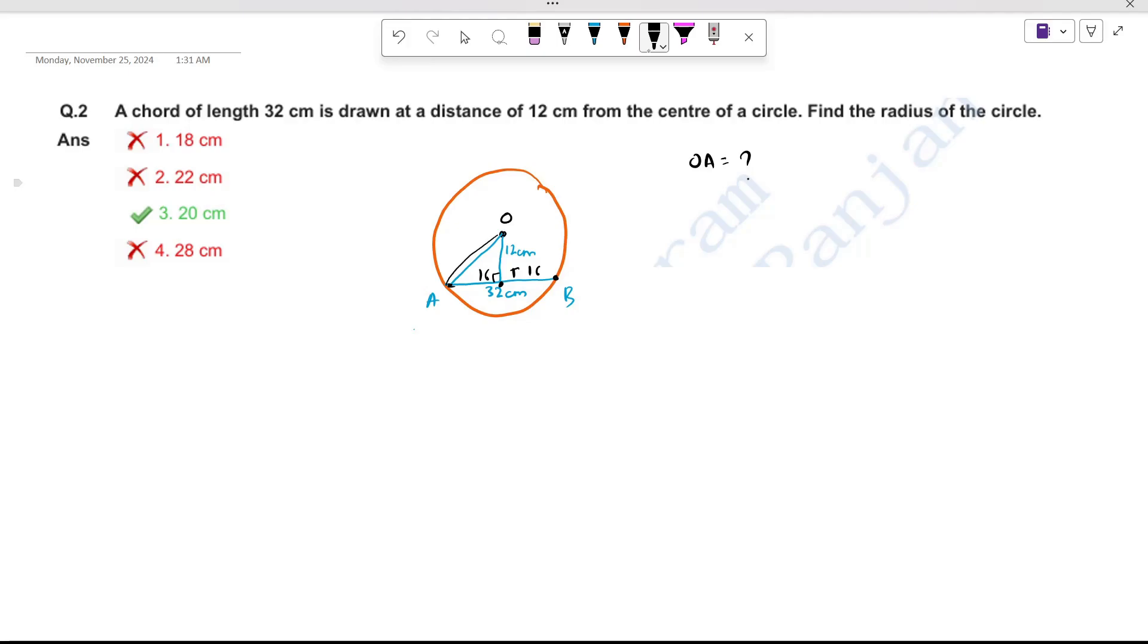So what will this become? This will become a right angle triangle. In the right angle triangle, the hypotenuse square is equal to perpendicular square plus base square.